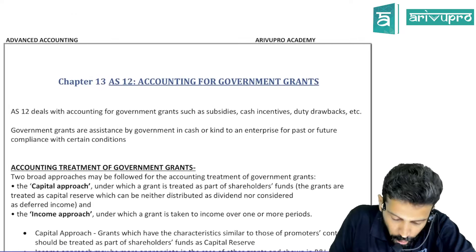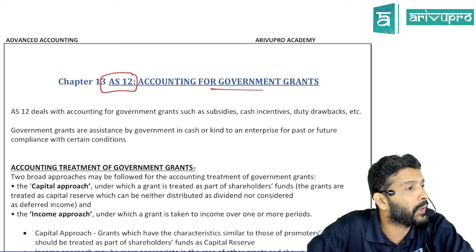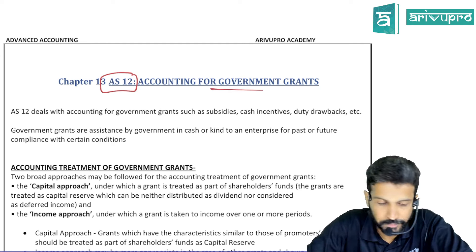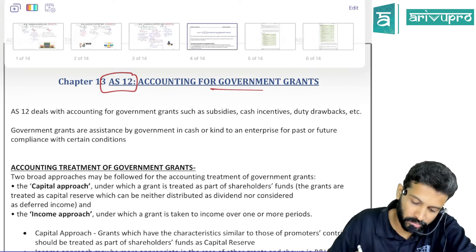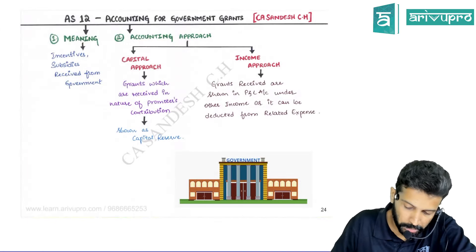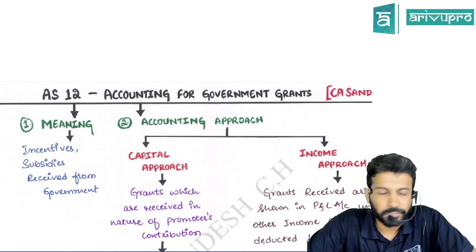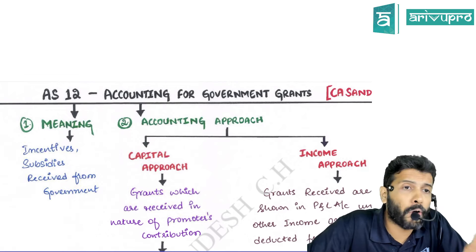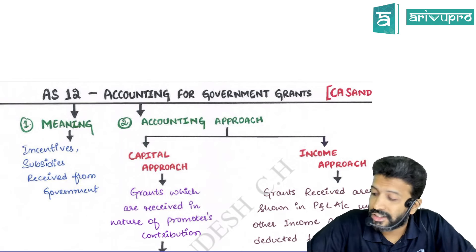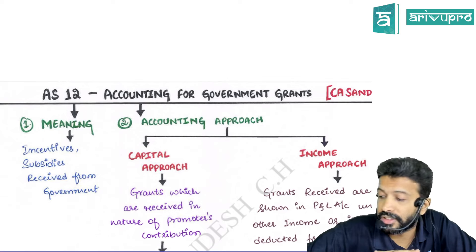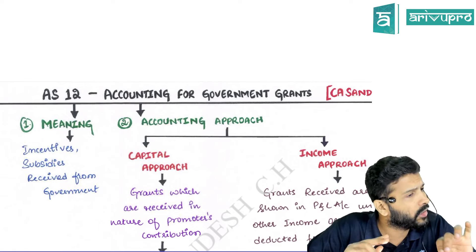We'll be starting with Accounting Standard 12, which talks about accounting for government grants. We'll try to understand everything with the help of our chart book. The name itself says accounting for government grants — the scope is: if you have received something from the government, how to account for that.